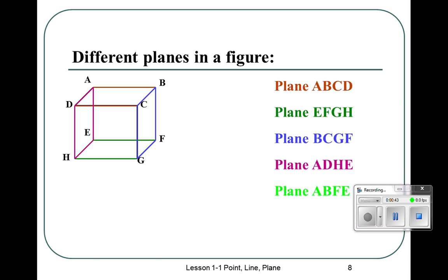A, B, F, E is the back, and C, D, H, G is the front. There are six planes that make up the faces of this cube.